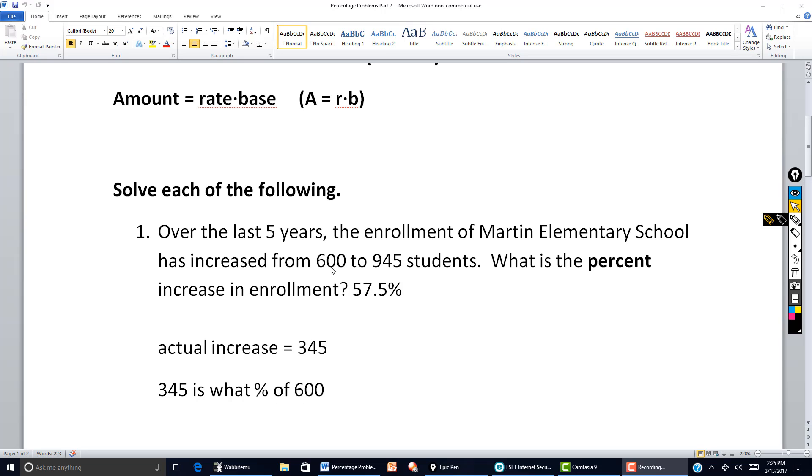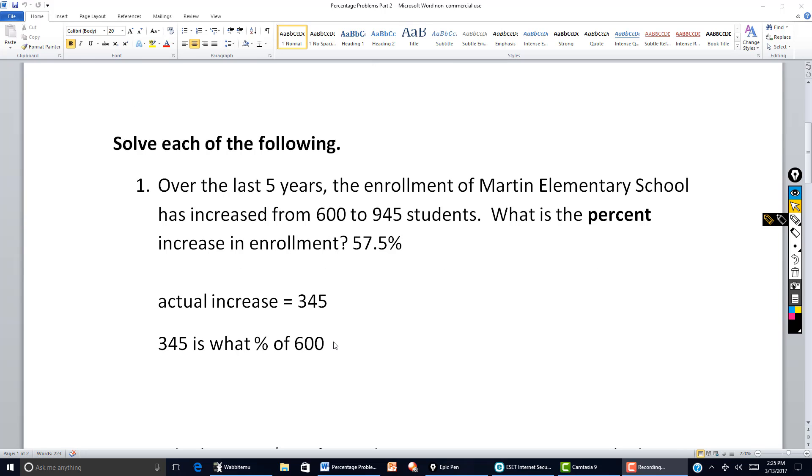We can see that from 600 to 945 the actual increase in students is 345. So we can state it this way: 345 is what percent of 600?